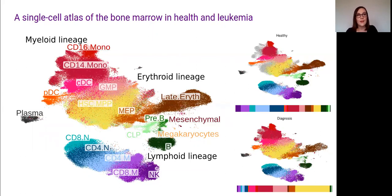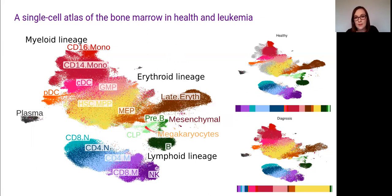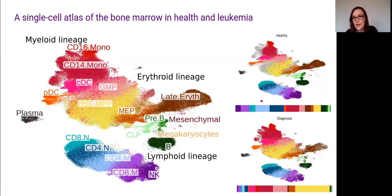Although we do have samples from AML patients post-treatment and at relapse, the majority of our data comes from healthy and diagnosis samples, so that's where we focus most of our analysis so far. You can see there's a really significant difference in cell type composition between the healthy and diagnosis samples. Lymphoid progenitor cells — common lymphoid progenitors and pre-B cells — present in the healthy samples have nearly disappeared in the diagnosis samples. Even the mature lymphoid populations like T and NK cells and B cells make up a much larger proportion in healthy samples, and are really depleted in the diagnosis samples. Instead, there's just a really huge proportion of HSCs.